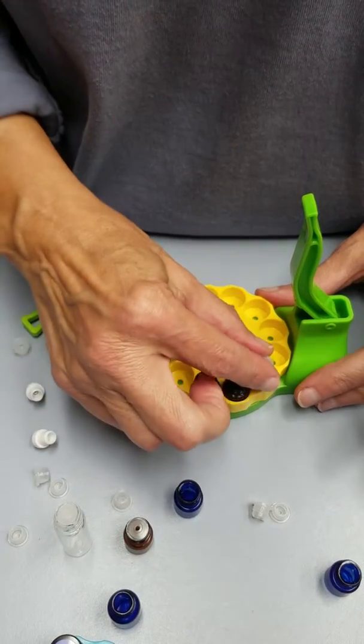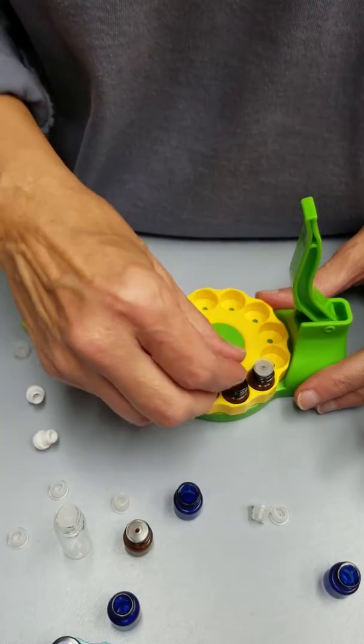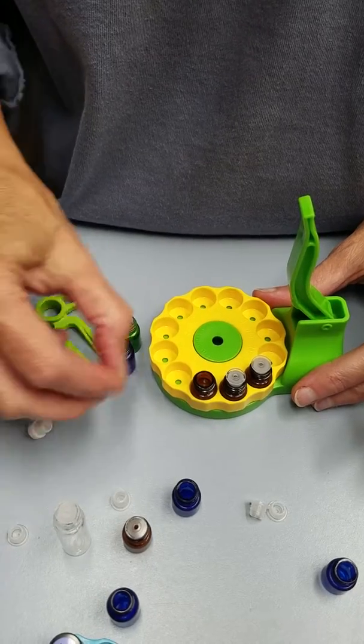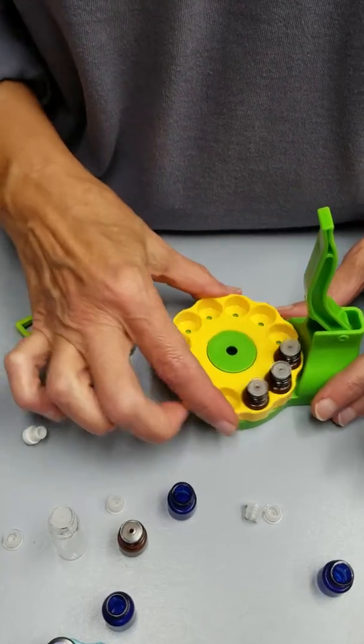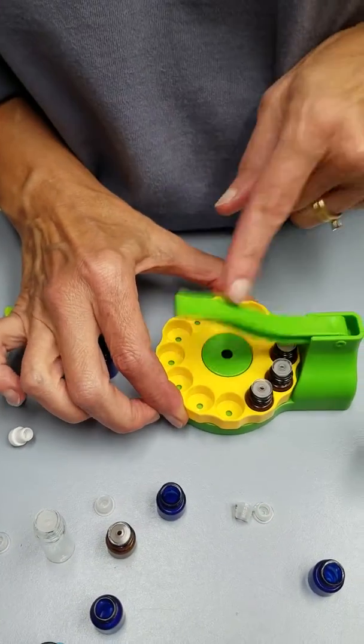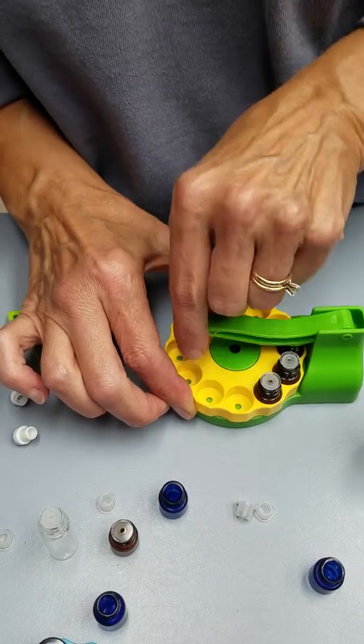Then you just put the little inserts on top of the bottles. Just lay them on top and then use the arm to press it down in. These are one half dram.